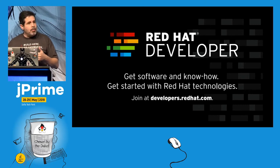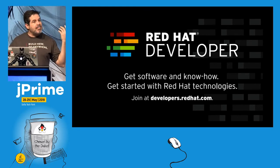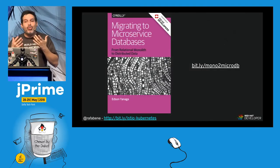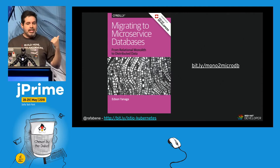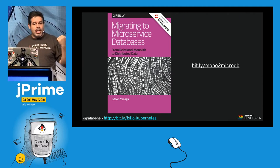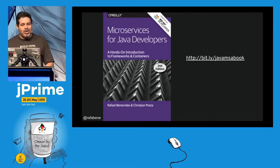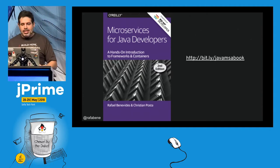Before starting this talk — how many of you are Java developers? Almost everyone, nice. I want to talk about the Red Hat Developers program at developers.redhat.com, where you can find totally free resources for developers: free ebooks like the one from Edson Yanaga on migrating microservices to databases, and the Istio service mesh for microservices book from Christian Posta and Burr Sutter.